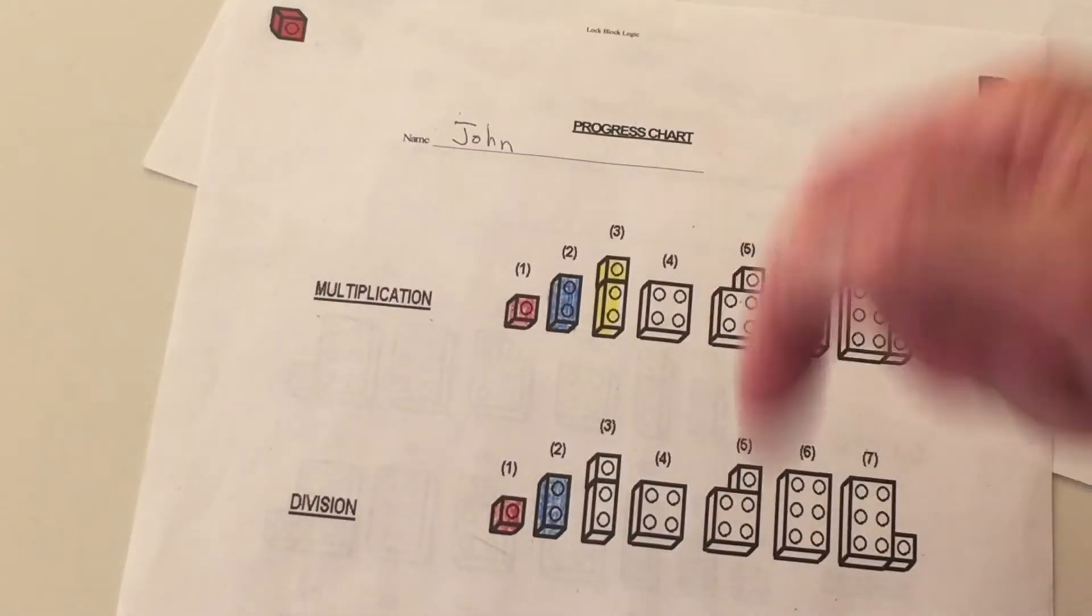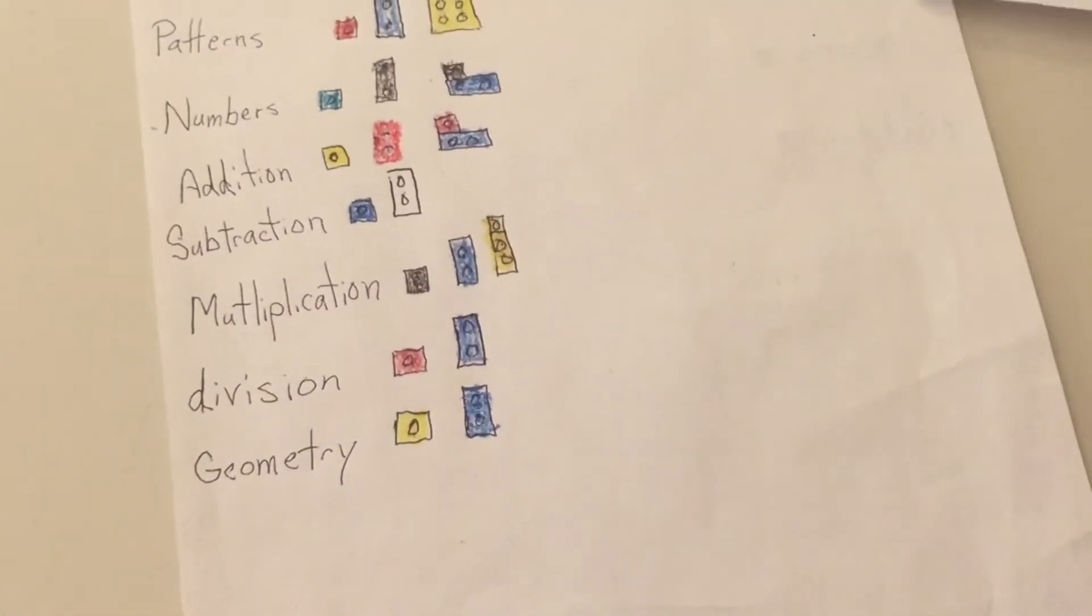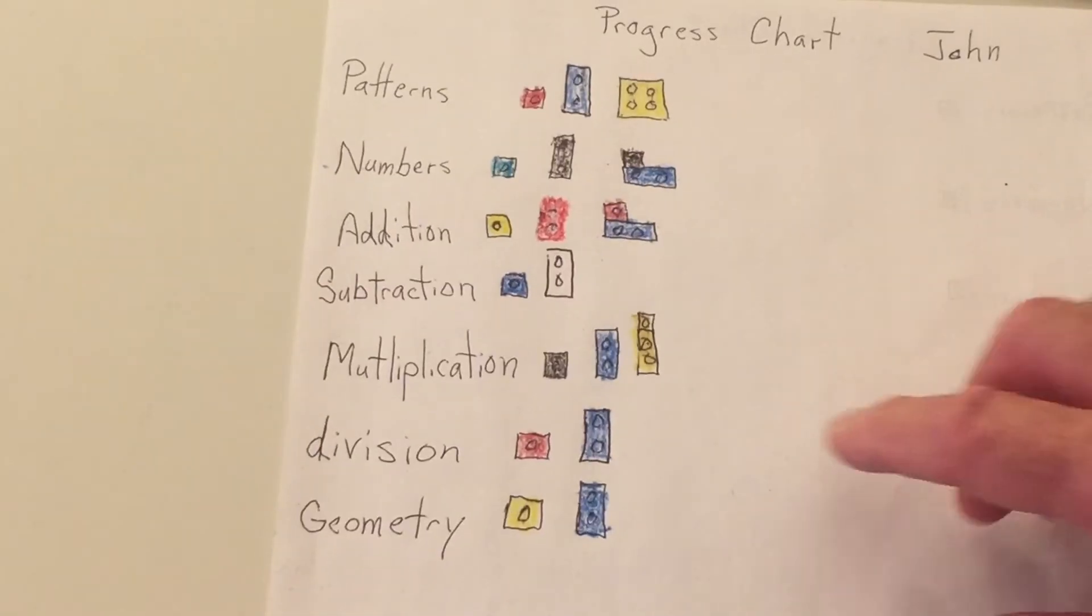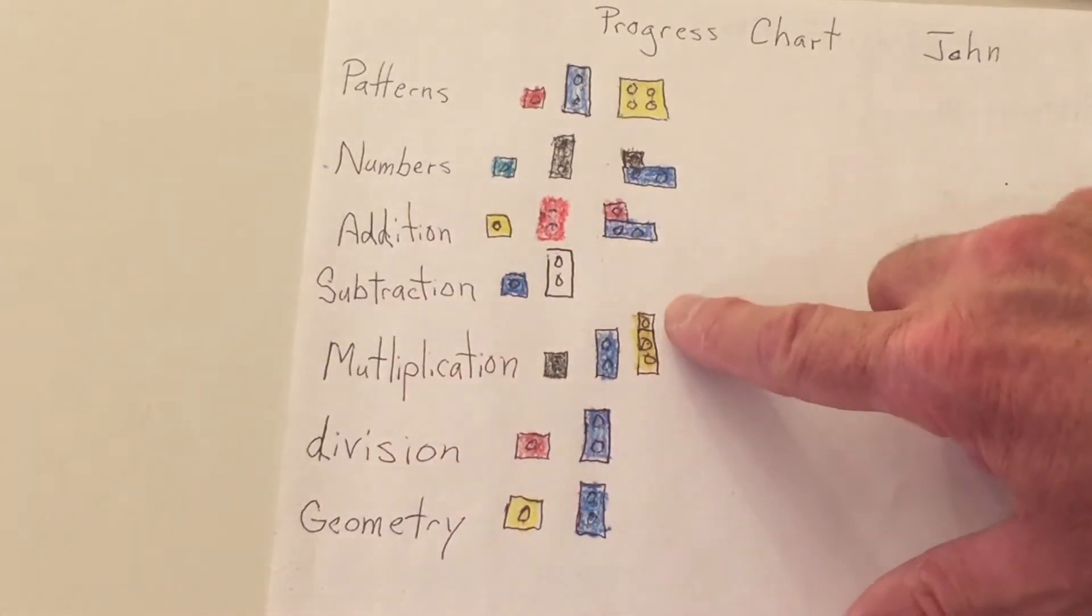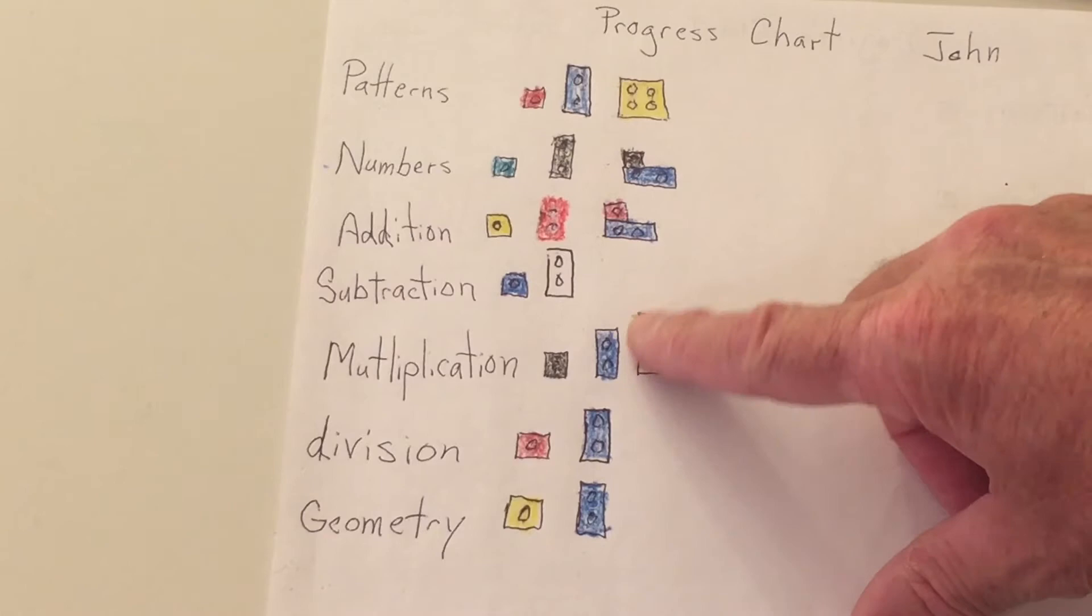And if you, and you can download this paper to mark your progress, or you can color it on a regular sheet of paper like this. And I have multiplication. We did the third activity. So this block shows three. One, two, three. We did the third activity.